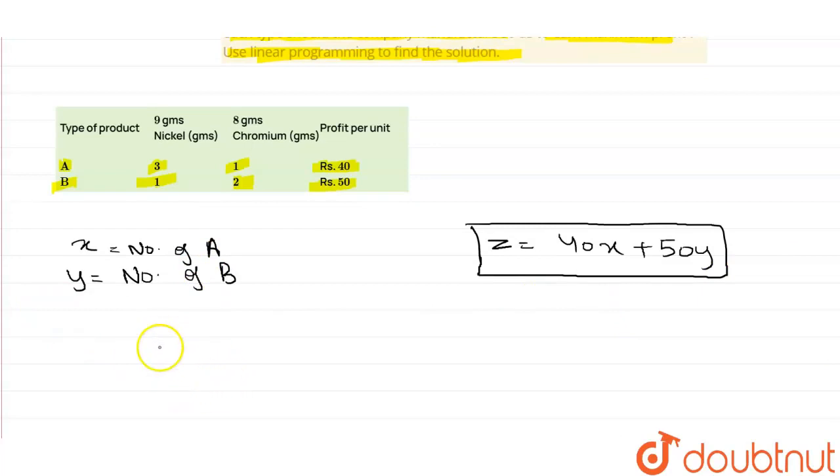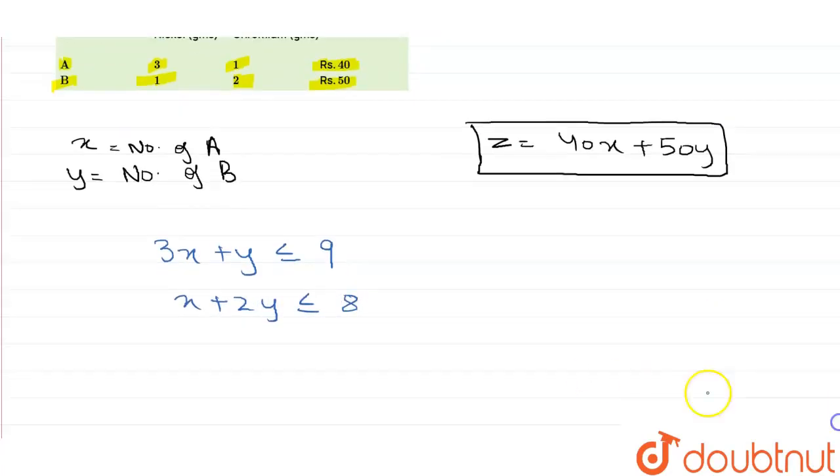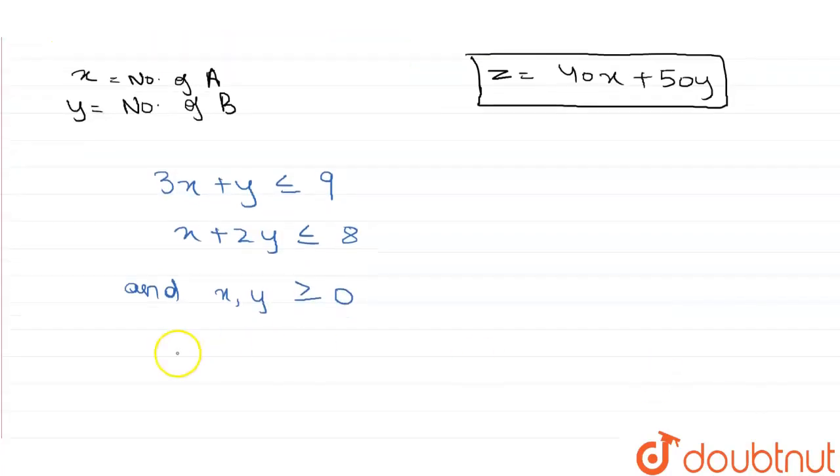Subject to the constraints: 3x plus y is less than or equal to 9, and x plus 2y is less than or equal to 8, and x, y is greater than or equal to 0.